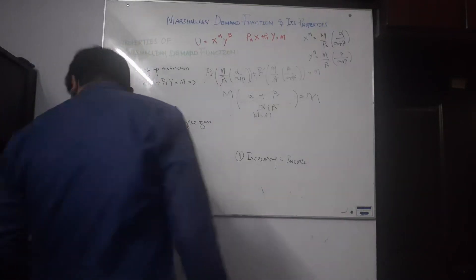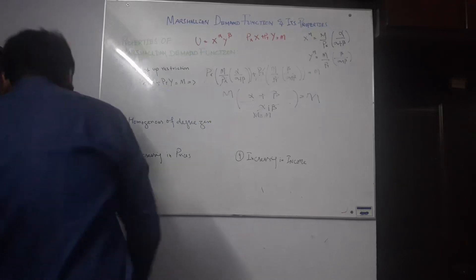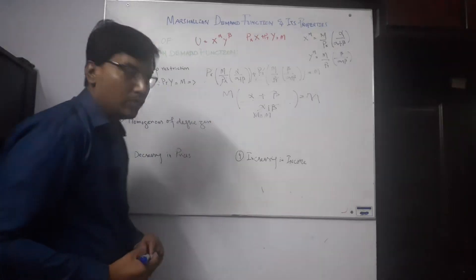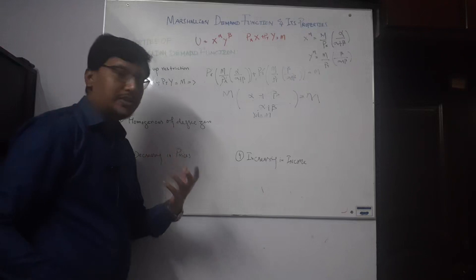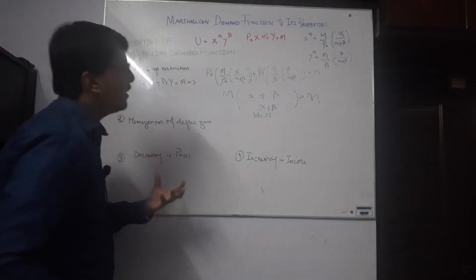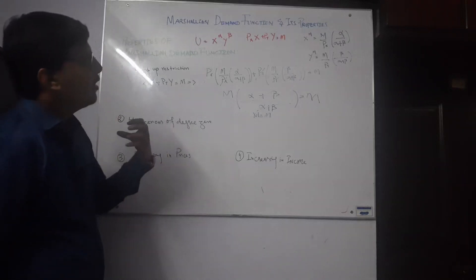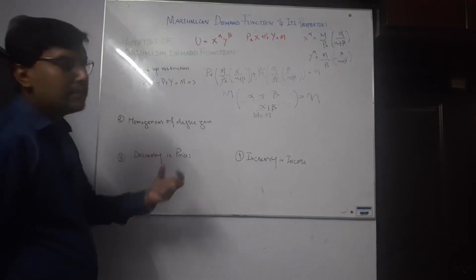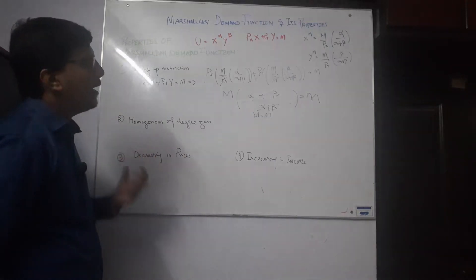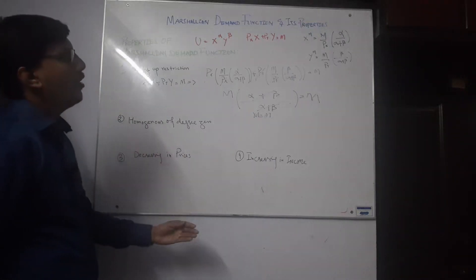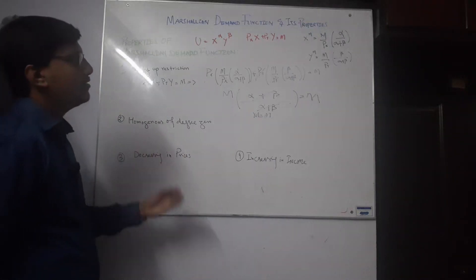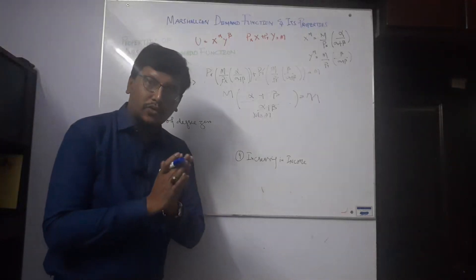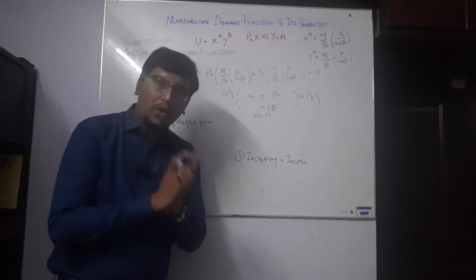The second and most important property is homogeneity of degree zero. This means if we multiply all prices and income by a positive scalar lambda, the demand does not change.